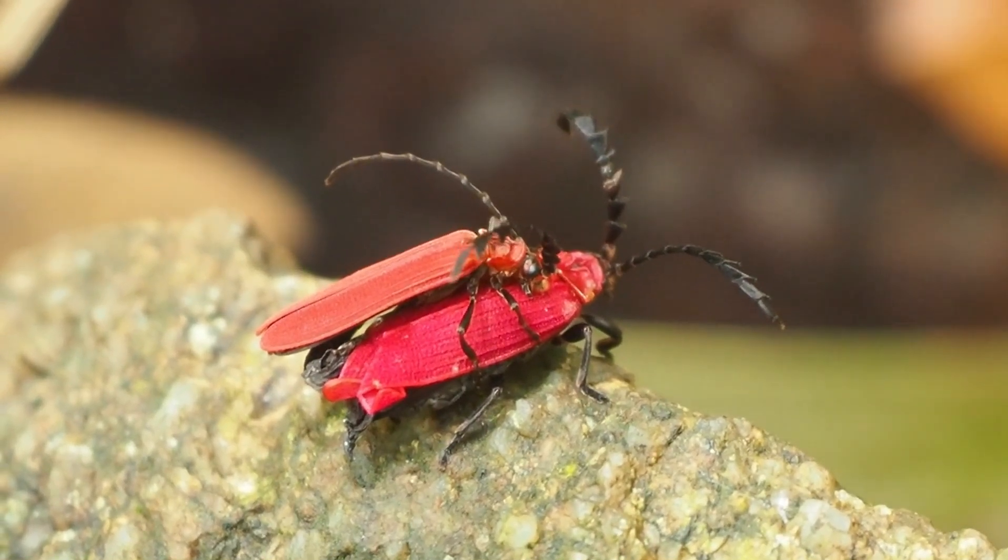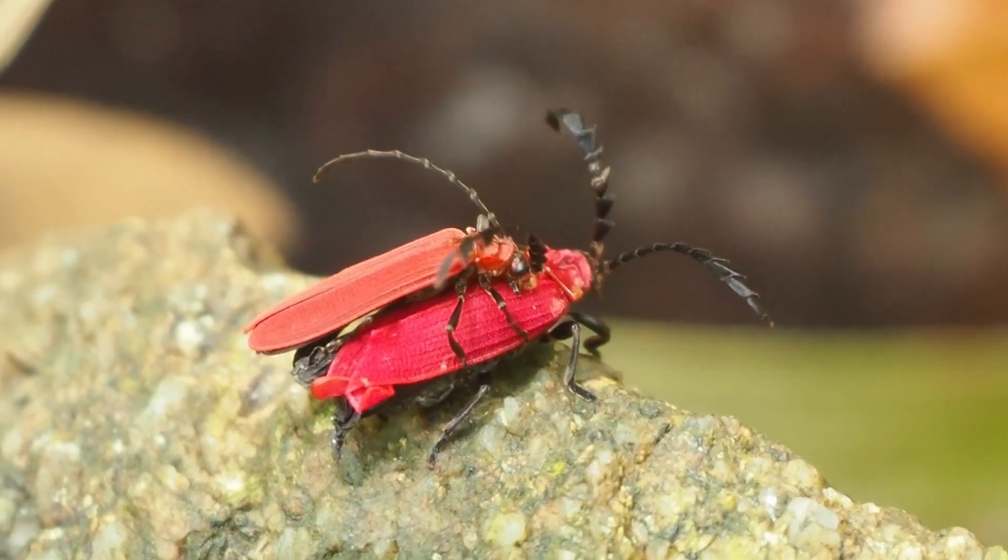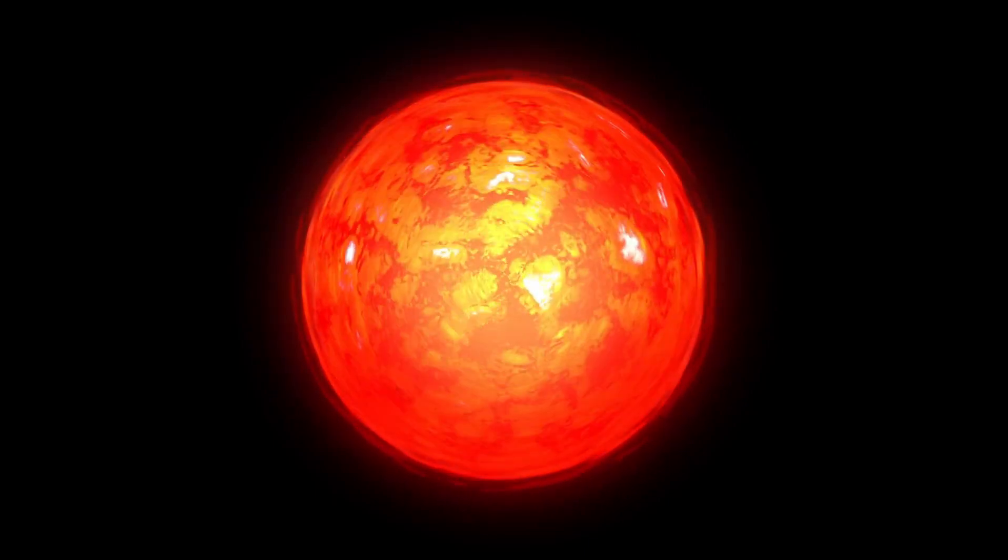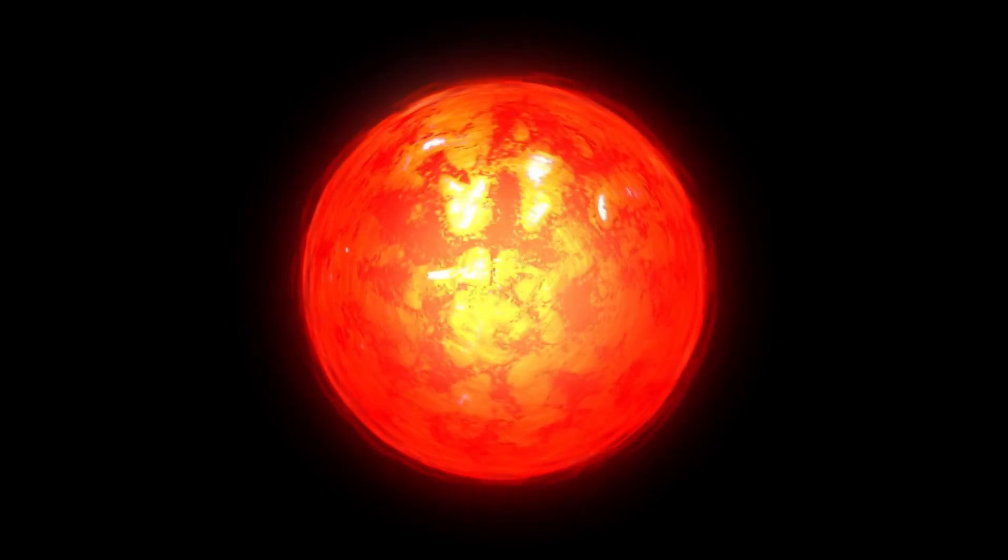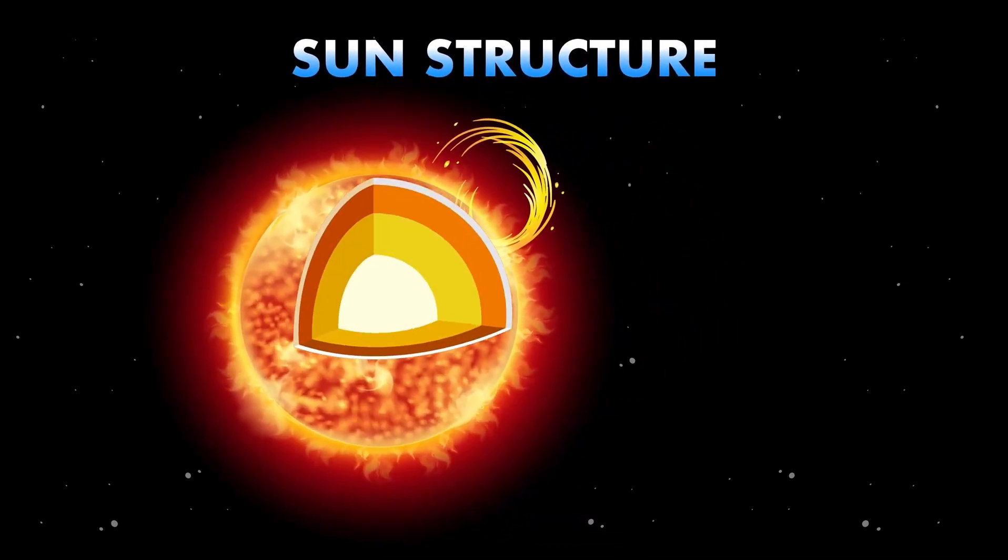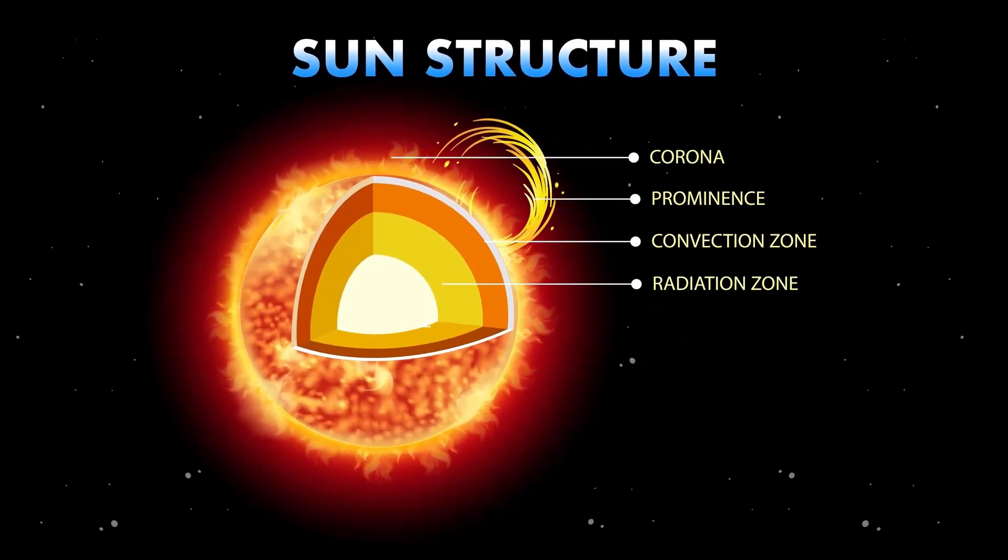Adding to Betelgeuse's mystique is its historical color change. Ancient Roman and Chinese writings suggest that around 2,000 years ago, Betelgeuse was yellow. It was only in the 9th century that Arabic scholars first described it as red. This color shift over human history is not just a detail in the annals of astronomy but a clue to the star's evolutionary path.